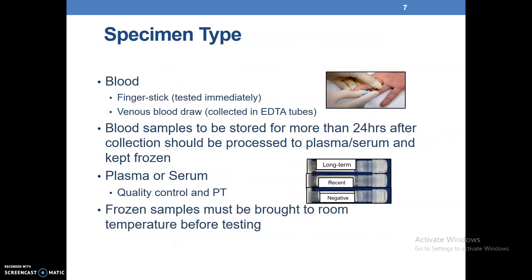The specimen types being used are blood. For Zimbabwe, we use the finger stick, which must be tested immediately. There is also the EDTA tube — venous blood draw collected in EDTA tubes. Blood samples stored for more than 24 hours should be processed to plasma or serum and kept frozen. Plasma or serum is used for quality control and proficiency testing, done monthly. These are examples of the QC panels used at sites: long-term, recent, and negative.